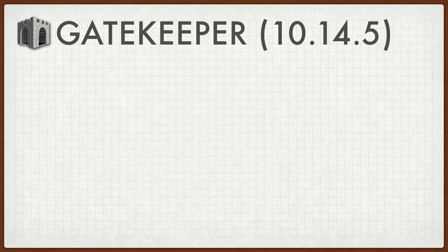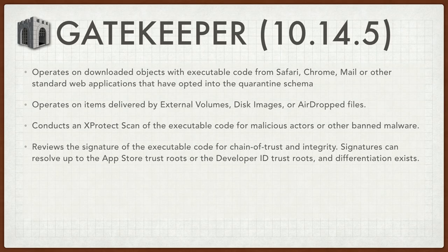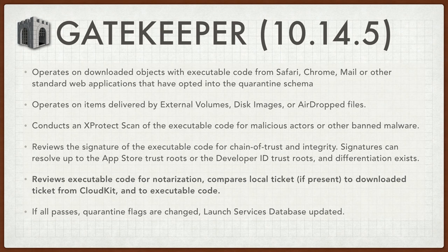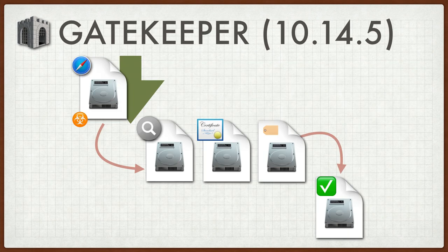So how does this change in 10.14.5? These first few bullet points look very familiar. In 10.14.5, it says it will review the executable code for notarization, compare the local ticket — if it's present — to a downloaded ticket from CloudKit if the internet is available, and then essentially execute the file. If all passes, quarantine flags are changed, the launch services database is updated, and off we go. So we add another step to our chart. When the disk image, or package, or the application itself is downloaded to the user's computer, it will have been stapled to it a ticket that says 'I am notarized.' The contents of that ticket are then checked against CloudKit, where the ticket is stored in its primary state. Once that comparison is complete, it says 'sweet, you're a notarized application, we shall continue now.'